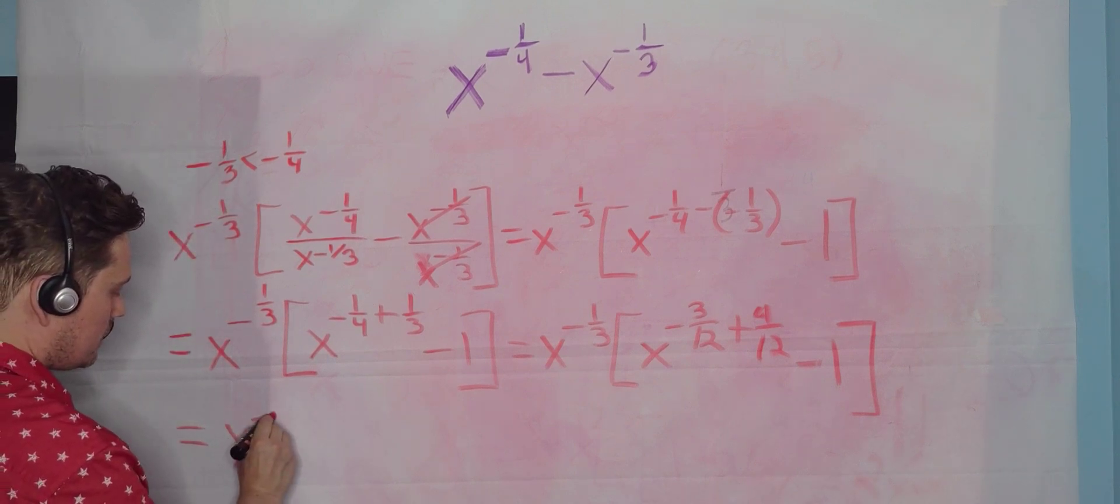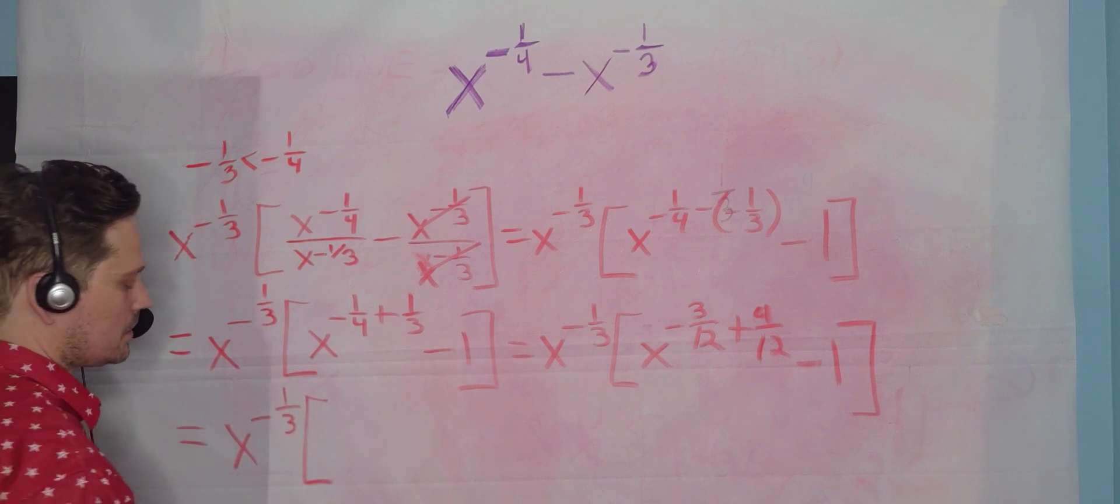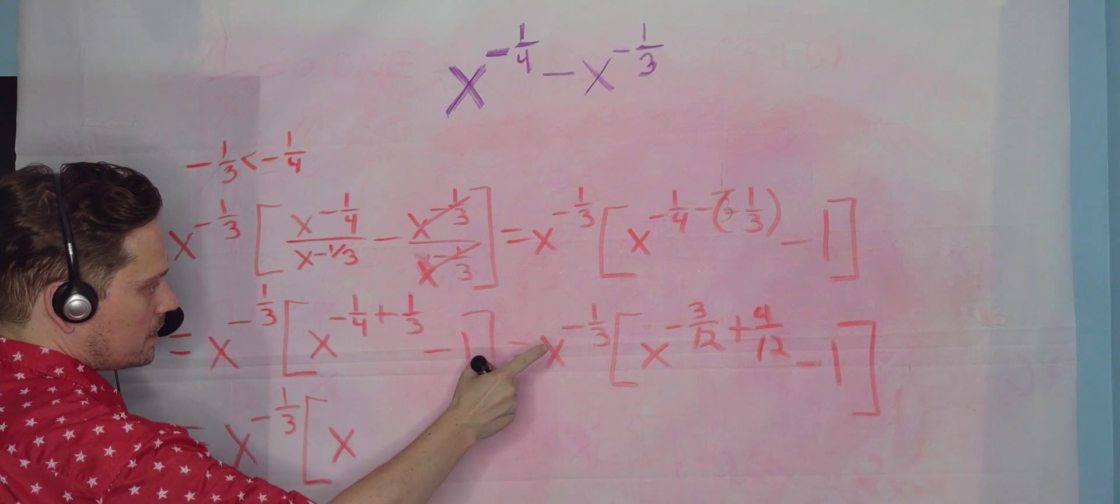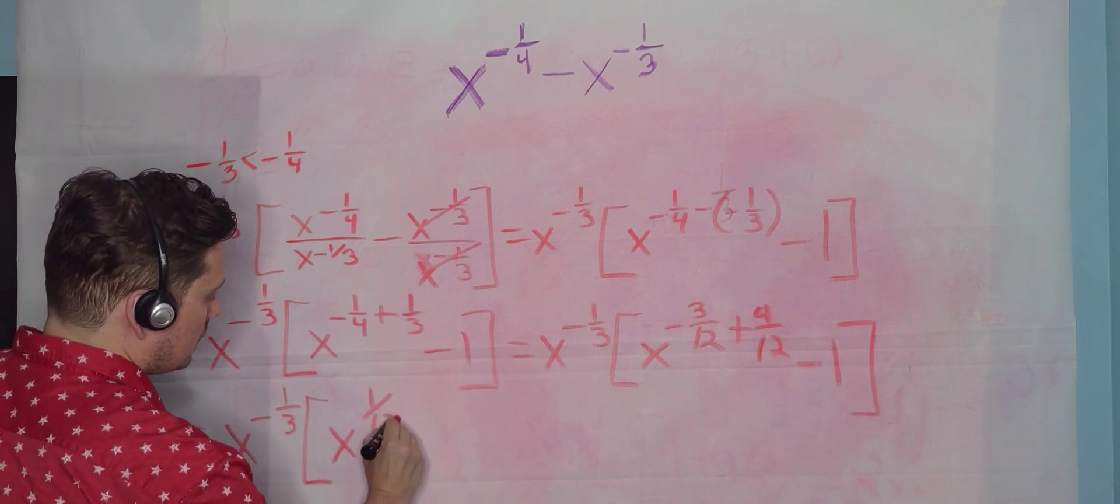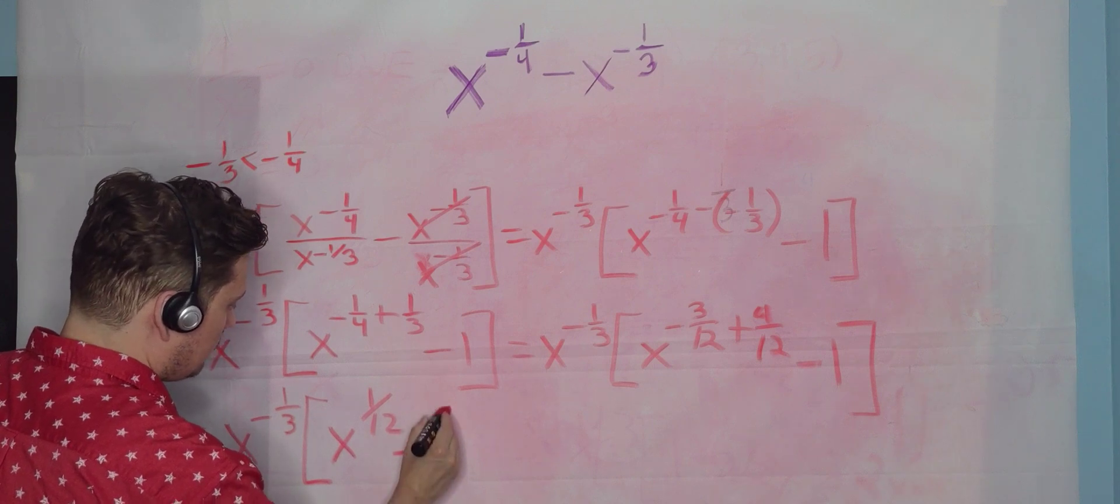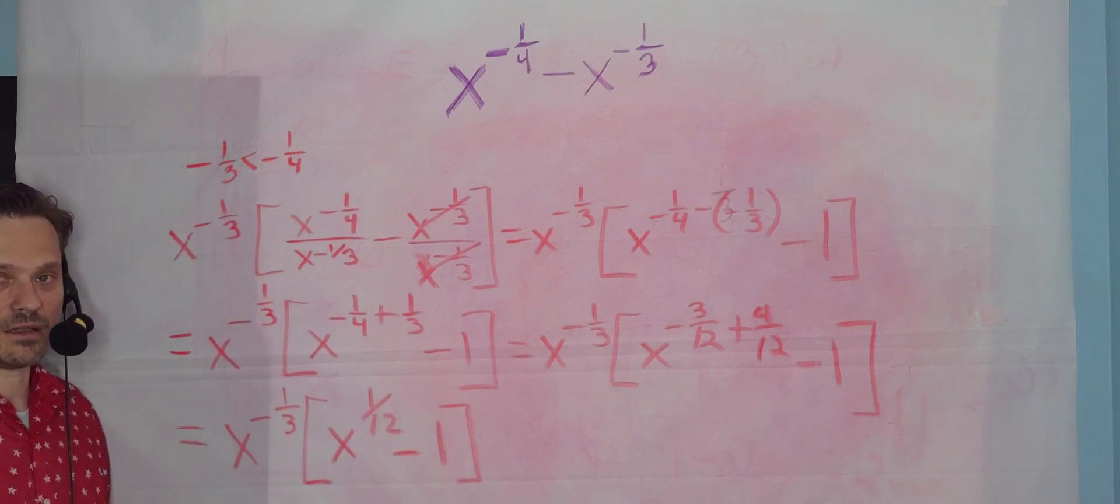So it's going to be x to the negative one-third, bracket. And then it's going to be x, negative three-twelfths plus four-twelfths is positive one-twelfth. And then minus one. And then this is an acceptable form of the answer.